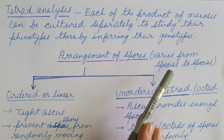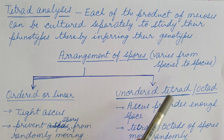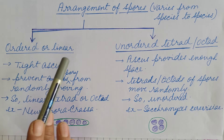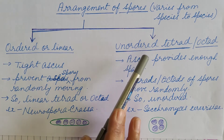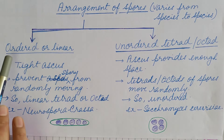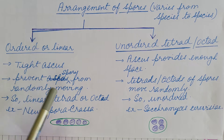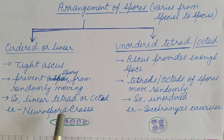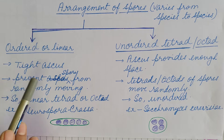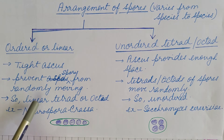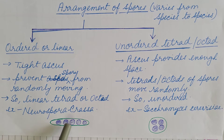Now we will discuss how these spores are arranged. Their arrangement varies from species to species. There are two types of arrangement: one is the ordered or linear arrangement of tetrad or octad, and the other is the unordered tetrad or octad. In ordered or linear tetrad and octad, a tight ascus is present — that is, the sac-like structure is narrow — which prevents spores from moving randomly. So the tetrad or octad are linearly arranged. Example: Neurospora crassa.